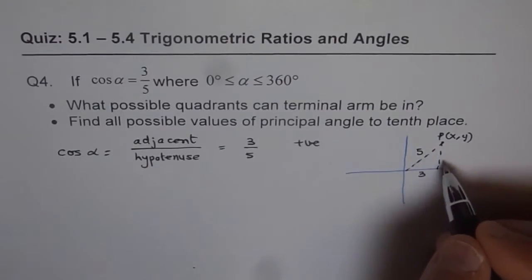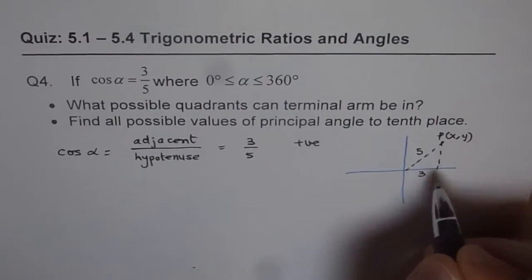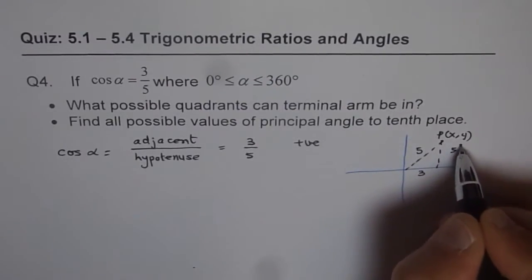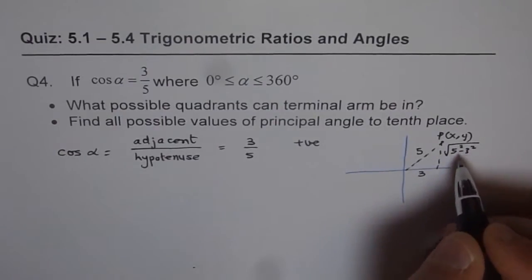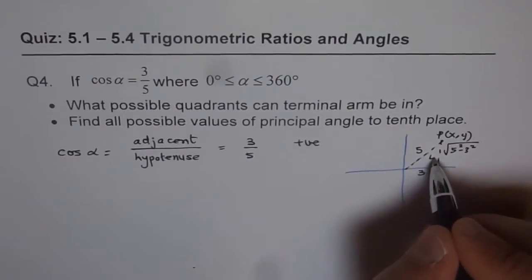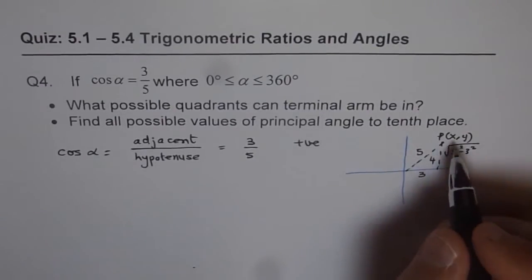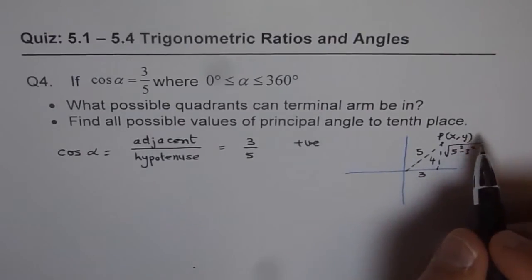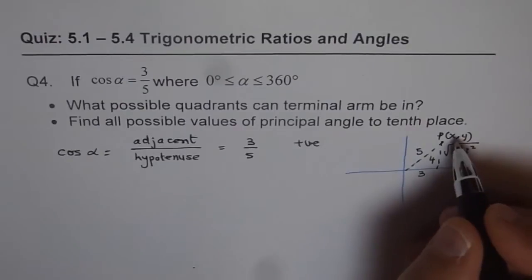Now the y value is 5 square minus 3 square square root, right? So y value will be 5 square minus 3 square root, which will be 25 minus 9, 16, square root of 16 will be 4. So we have a triangle with 3, 4, 5 as the sides. Now the coordinate therefore will be 3 and 4, correct? So we can write x and y value as 3 and 4.